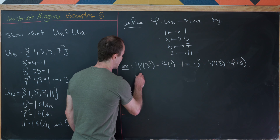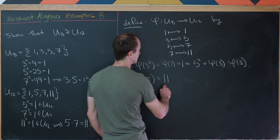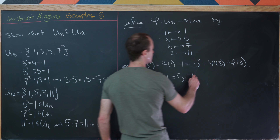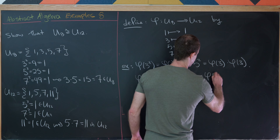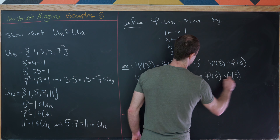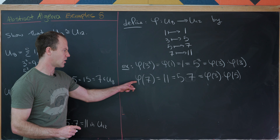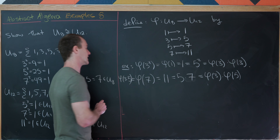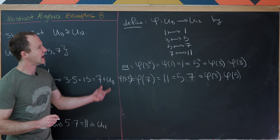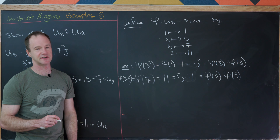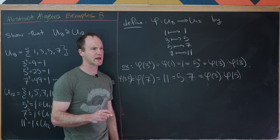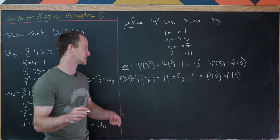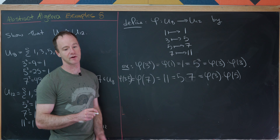Furthermore, φ(7) = 11 = 5×7 = φ(3)·φ(5), and 7 itself equals 3×5 in U8, which shows the homomorphism property. Our map is clearly injective and bijective. In these small cases it really boils down to checking that everything works for all possible multiplications — I'll leave the rest for you.